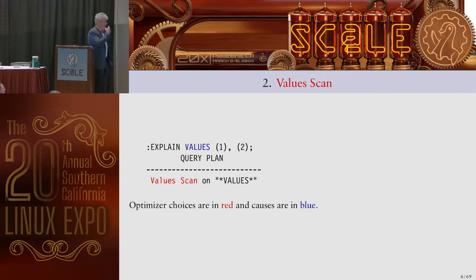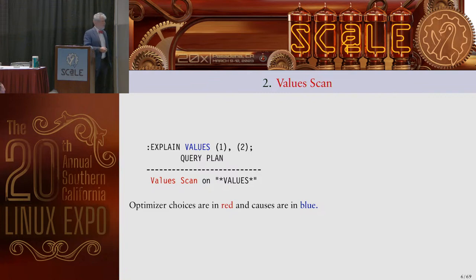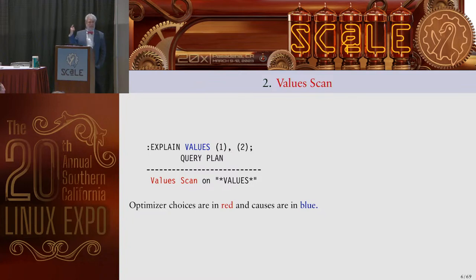Number two: the values scan. When you do INSERT INTO with VALUES, people think that's just a clause — but there is also a VALUES command. What I'm showing is the VALUES command returning two rows, a 1 and a 2. That's how you get the values node. In these slides, blue is the cause and red is the result, and that pattern repeats throughout.